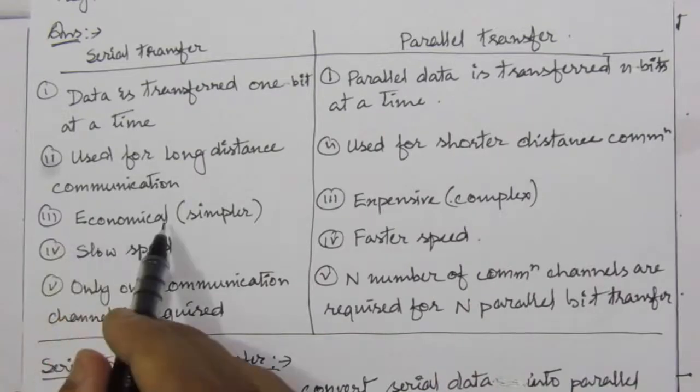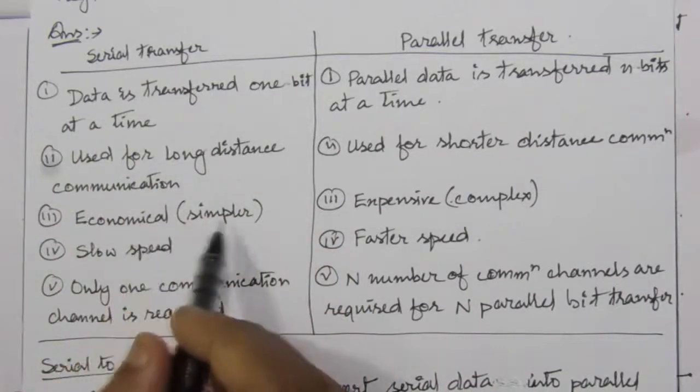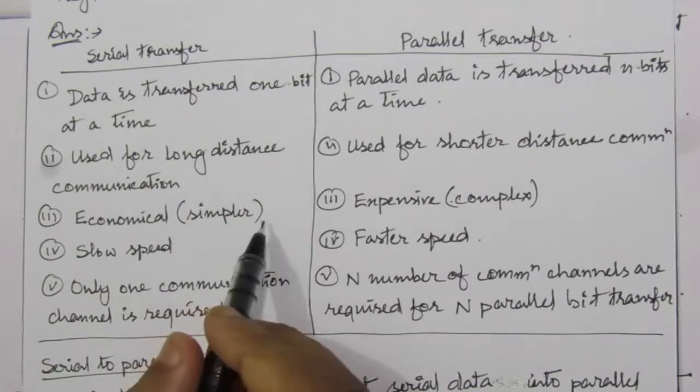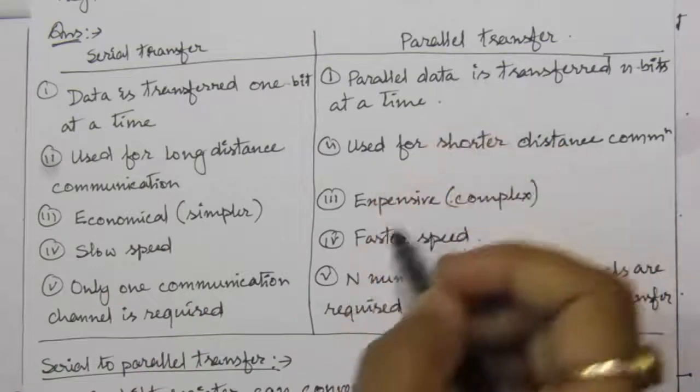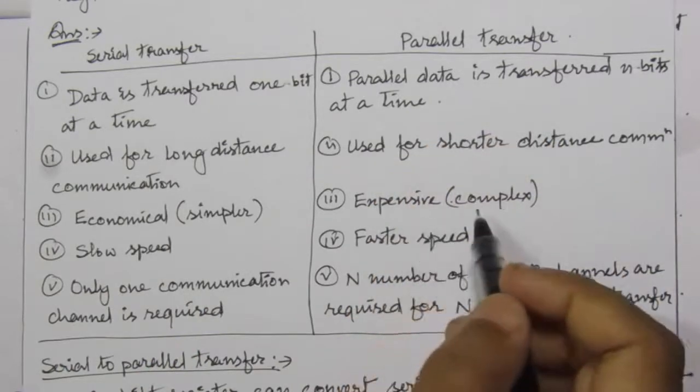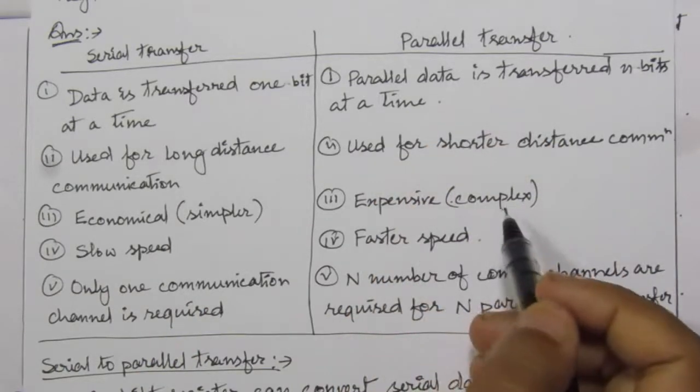The third difference is that serial transfer is economical because the circuit is simpler, while parallel transfer is expensive because the circuit is complex.